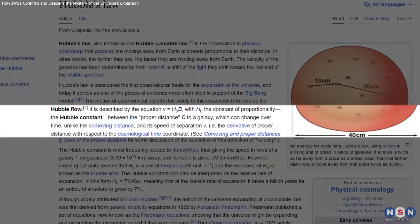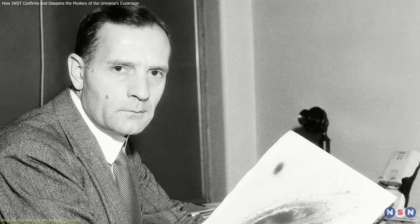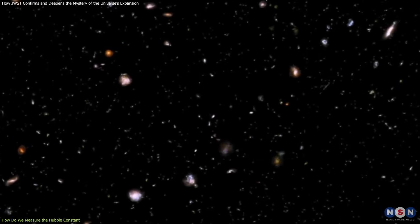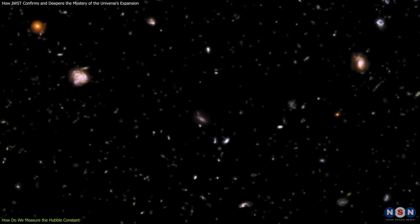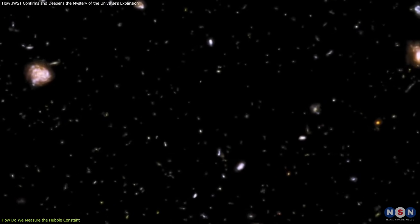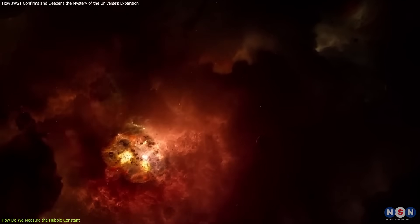So what is the Hubble constant, and how do astronomers measure it? The Hubble constant is named after Edwin Hubble, who discovered in 1929 that distant galaxies are moving away from us and that their speed is proportional to their distance. This means that the universe is expanding and that it was smaller and denser in the past.